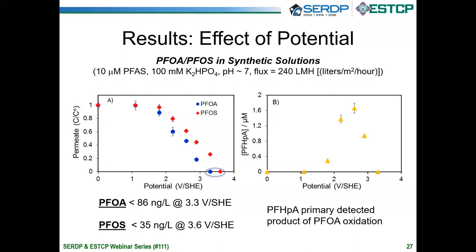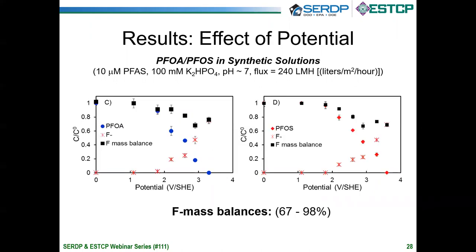We detected PFHEPA — one carbon atom shorter than PFOA — which peaks at about 2.5 volts, but at the highest potential tested it is also below our detection limit. We attempted a fluorine mass balance: as we go to higher potentials, the mass balance is less than 100%, suggesting we are forming some intermediates not detected by LC-MS, or some very short-chain PFAS could be volatile. Future work will focus on completing this mass balance.